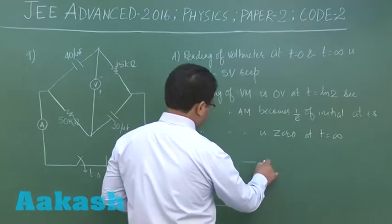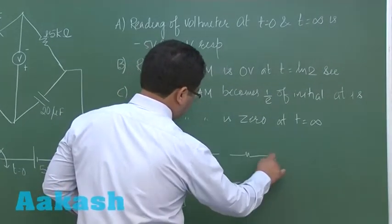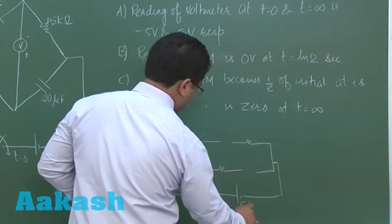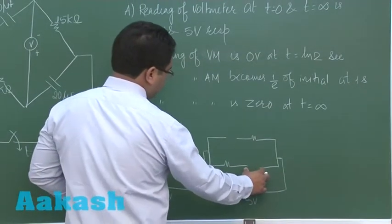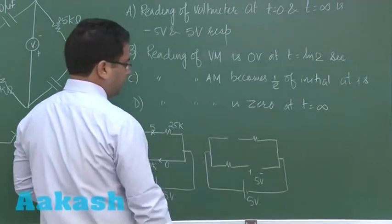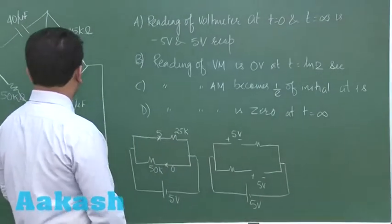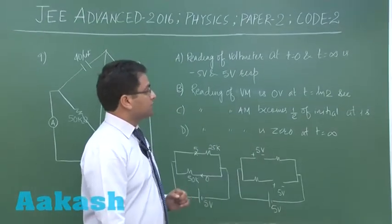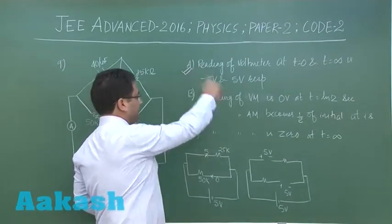At t = ∞, the capacitor becomes open-circuited. The whole potential difference will appear across the capacitors — so that will be ±5 V here and ±5 V there. The positive terminal is connected here and the negative terminal here. So at t = ∞ the voltmeter will show a reading of +5 V. So option A is correct.